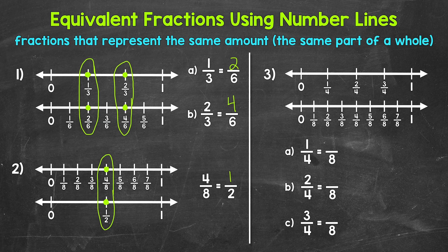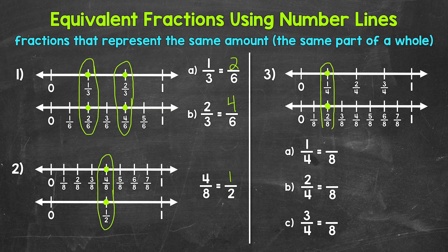Lastly, let's take a look at number 3, where we have a number line showing fourths and a number line showing eighths. We're going to find 3 equivalent fractions here. Let's start with part A: 1 fourth is equivalent to how many eighths? 1 fourth is right here on the number line, and right below, 2 eighths is in the same place. 1 fourth and 2 eighths are equivalent fractions.